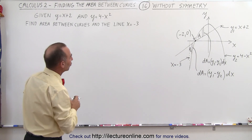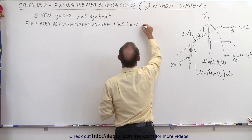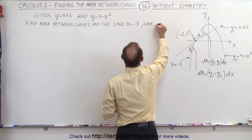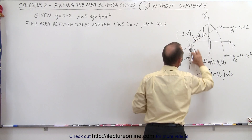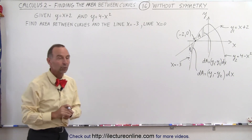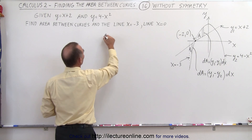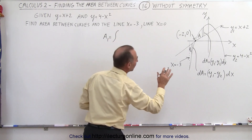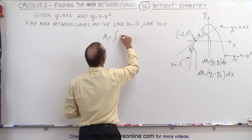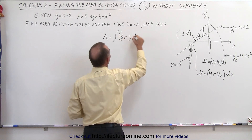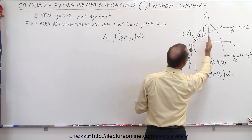We've already indicated the places where they cross. Notice we also want to keep the line x equals 1 and the line x equals 0, which is the y-axis, so we want to find this area element right here and this area right here in order to find the total area between the curves. Let's start with A1. A1 is equal to the integral of dA, and the limits of integration are going to be from x equals negative 2 to x equals 0.